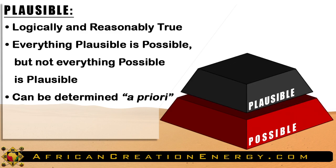The second layer of the pyramid, colored in black, represents information, premises, ideas, or concepts that are plausible. The word plausible in scientific terminology means logical and reasonable. From the infinite number of possibilities, we use logic and reason to determine which piece of information, idea, or concept is most reasonable. Different forms of reason are used to determine plausibility, including inductive reasoning, abductive reasoning, causal reasoning, and practical reasoning. Plausibility means you can demonstrate without any logical fallacies that there is valid reason something is true. Everything determined as plausible is also possible, but not everything possible is plausible.